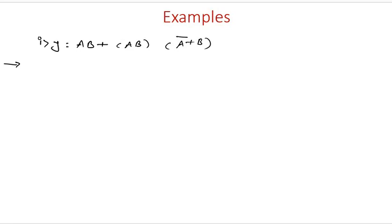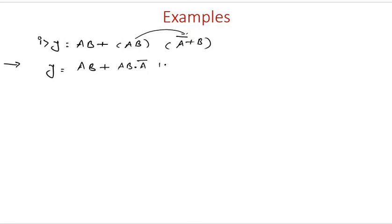We have to simplify this. The steps will be the same — first find out the product terms and simplify them. So y is equal to: this term ab stays as it is, plus now ab multiplied into the bracket terms gives ab into a-bar, plus ab into b-bar.